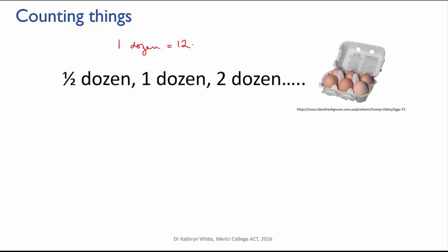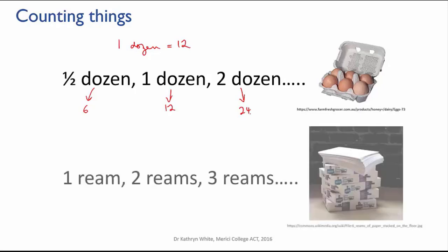This picture shows six eggs. Six is half of 12, so this is half a dozen eggs. Then there are products that come in even larger groups. A standard packet of printing paper contains 500 sheets of paper. 500 is known as a ream.